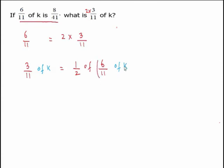And it is given that 6 over 11 of k is 8 over 41. Therefore we know this portion is equal to 8 over 41. And therefore 3 over 11 of k is going to be equal to 1 half of, means times, 8 over 41. We can simplify the 2 and the 8, write a 4 over here. So this is 1 times 4 over 41, which is 4 over 41.